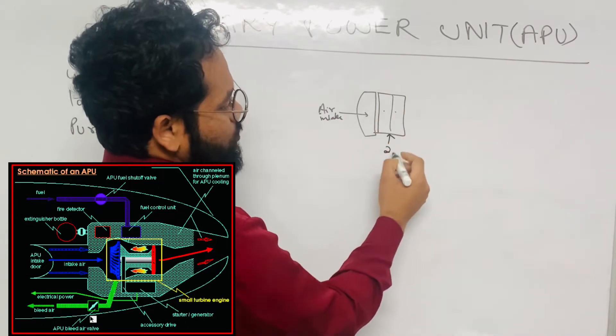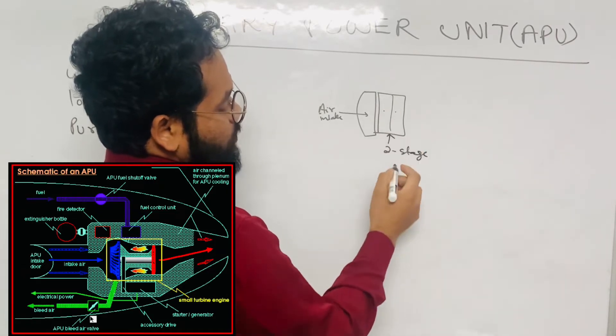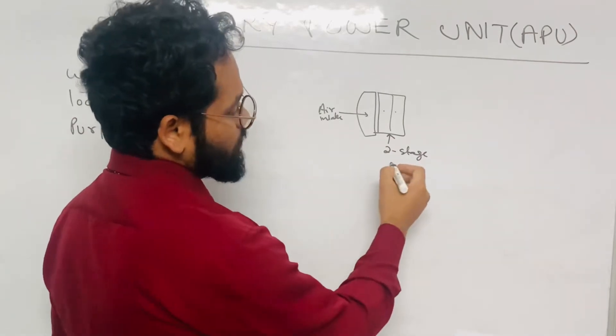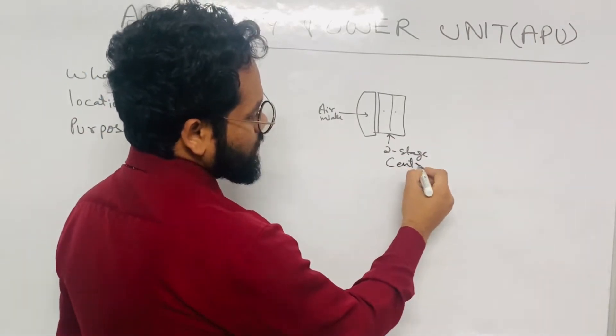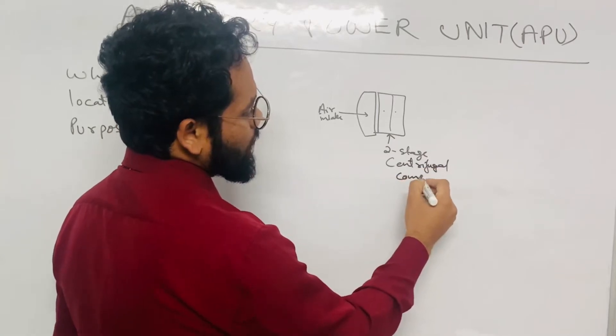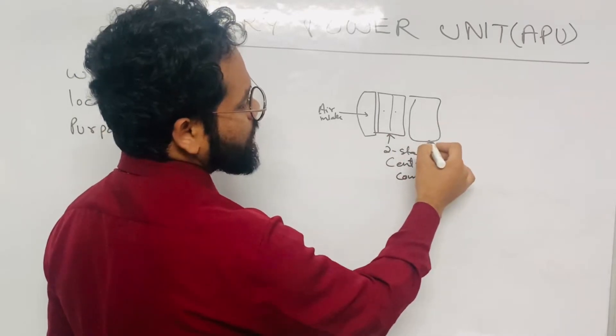So which compressor is APU using? There are two stages. The type of compressor which is used in the APU, as I have told, is centrifugal flow type, centrifugal compressor. Next we have is the combustion chamber.